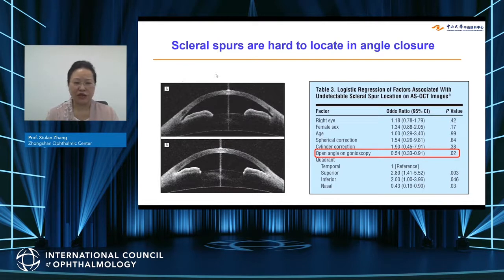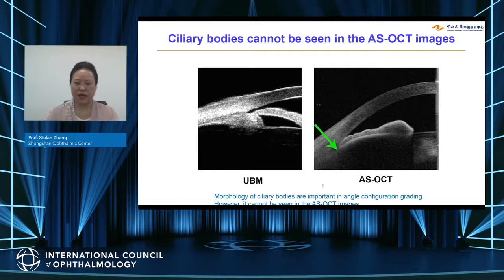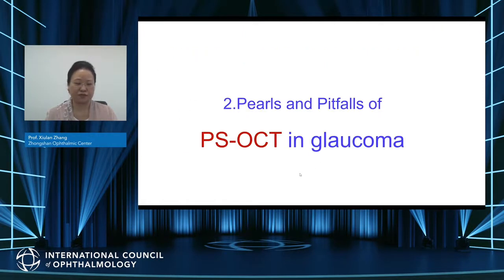However, AS-OCT cannot reliably locate the scleral spur in the scan, which is very important for classifying open and narrow angle. Also, the ciliary body cannot be seen in AS-OCT, which is important for grading angle configuration. Future improvements needed include faster scanning speed, larger image area, clearer imaging of blood vessels and post-trabecular outflow pathways, and lens opacity classification based on AS-OCT.